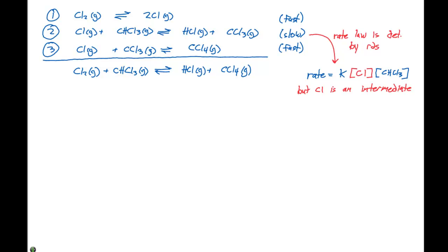We were told that the second step of this elementary mechanism was the slow step, so that means the rate law is gonna be determined by that step. This gives a rate equal K times Cl times the concentration of CHCl3.